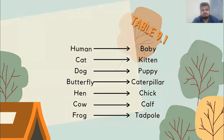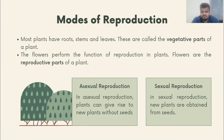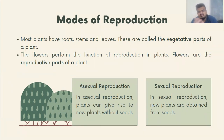Now let's look at the modes of reproduction. Just as we studied for plants, animals also have two main modes by which they can reproduce: sexual reproduction and asexual reproduction. Before going into that, let me recall some important points from Reproduction in Plants from class 7.